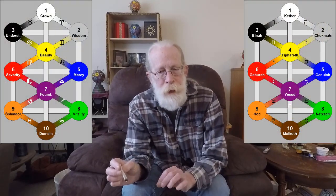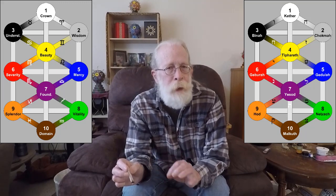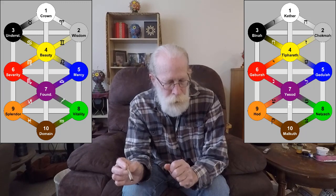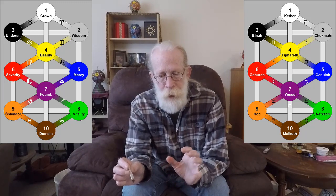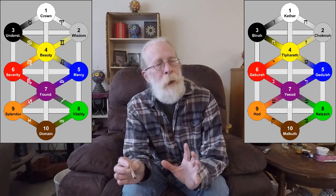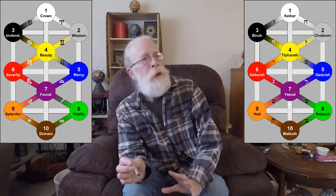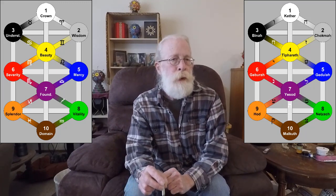The fourth component of the Tree of Life are the simple letters — those letters that have just one way of pronouncing. Now these are twelve diagonal paths, and they each have basically three sets of symbols that belong to them.